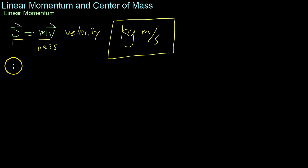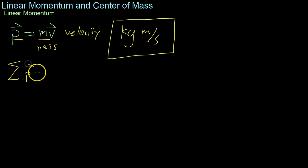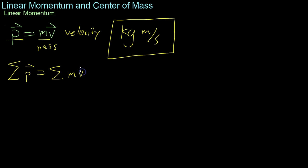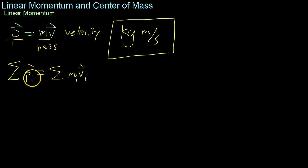Momentum is much like force in that you can have the superposition of momentum. Basically, to get the total momentum within a system, all you have to do is sum the individual parts. You sum each individual mass times its velocity and you'll get the total momentum of the system.